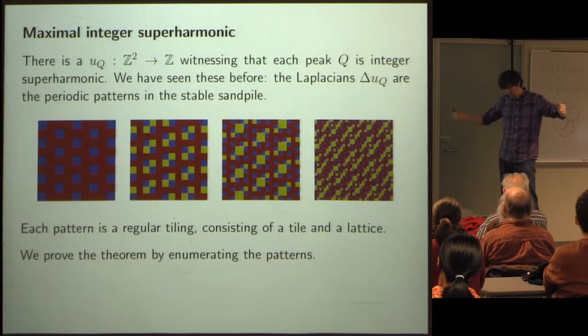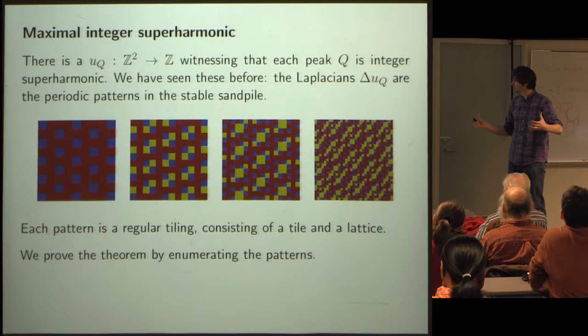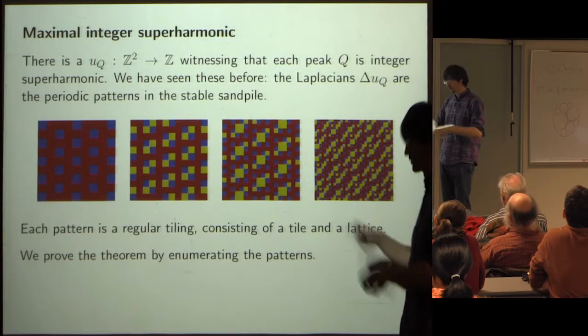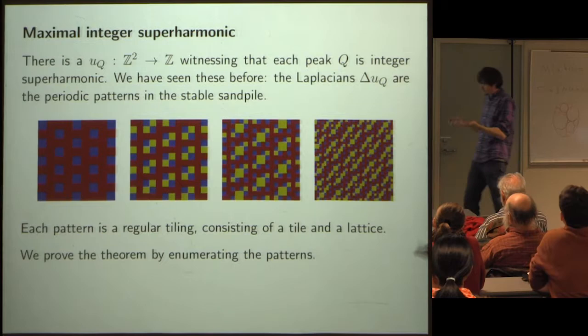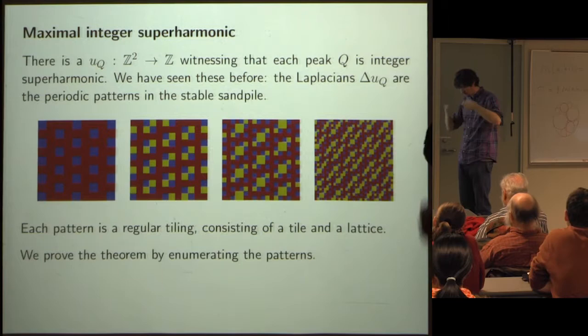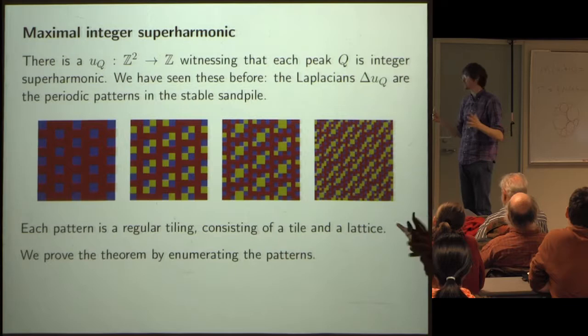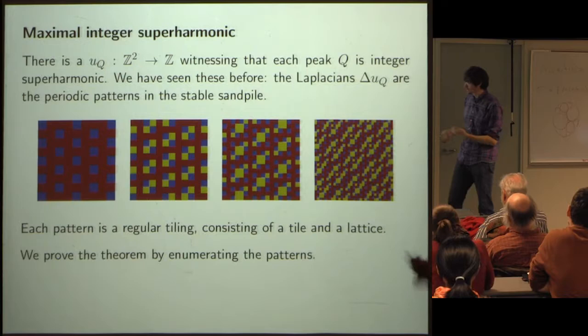You can enumerate all the peaks over the circles, in order of the complexity of the rational numbers. What you see are ever-increasingly complicated patterns, and you can always find those patterns somewhere in the stable sandpile. It turns out it's enough to enumerate all these patterns to prove the theorem: if you can construct one of these patterns for each peak with the right properties, that implies the theorem.